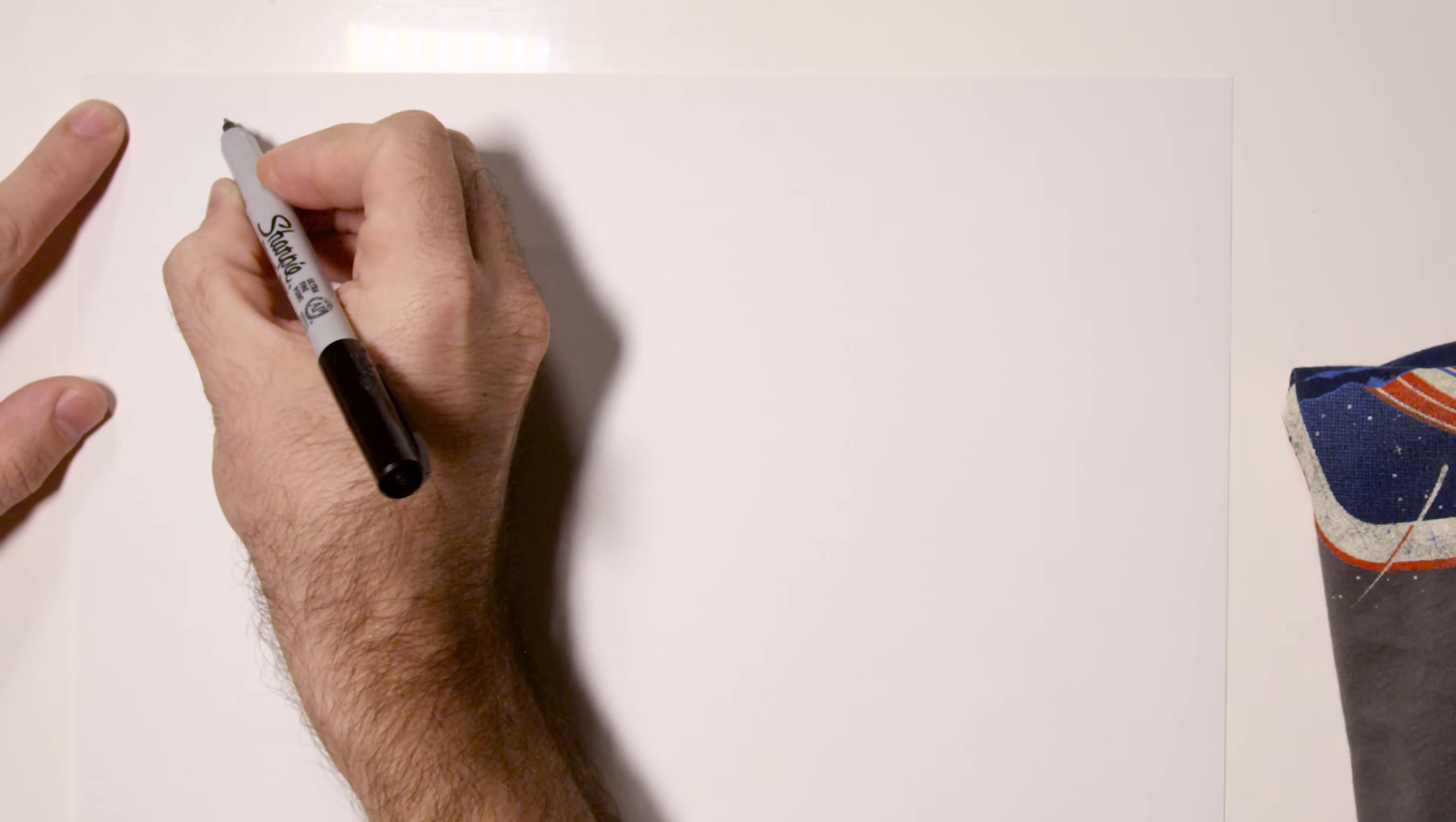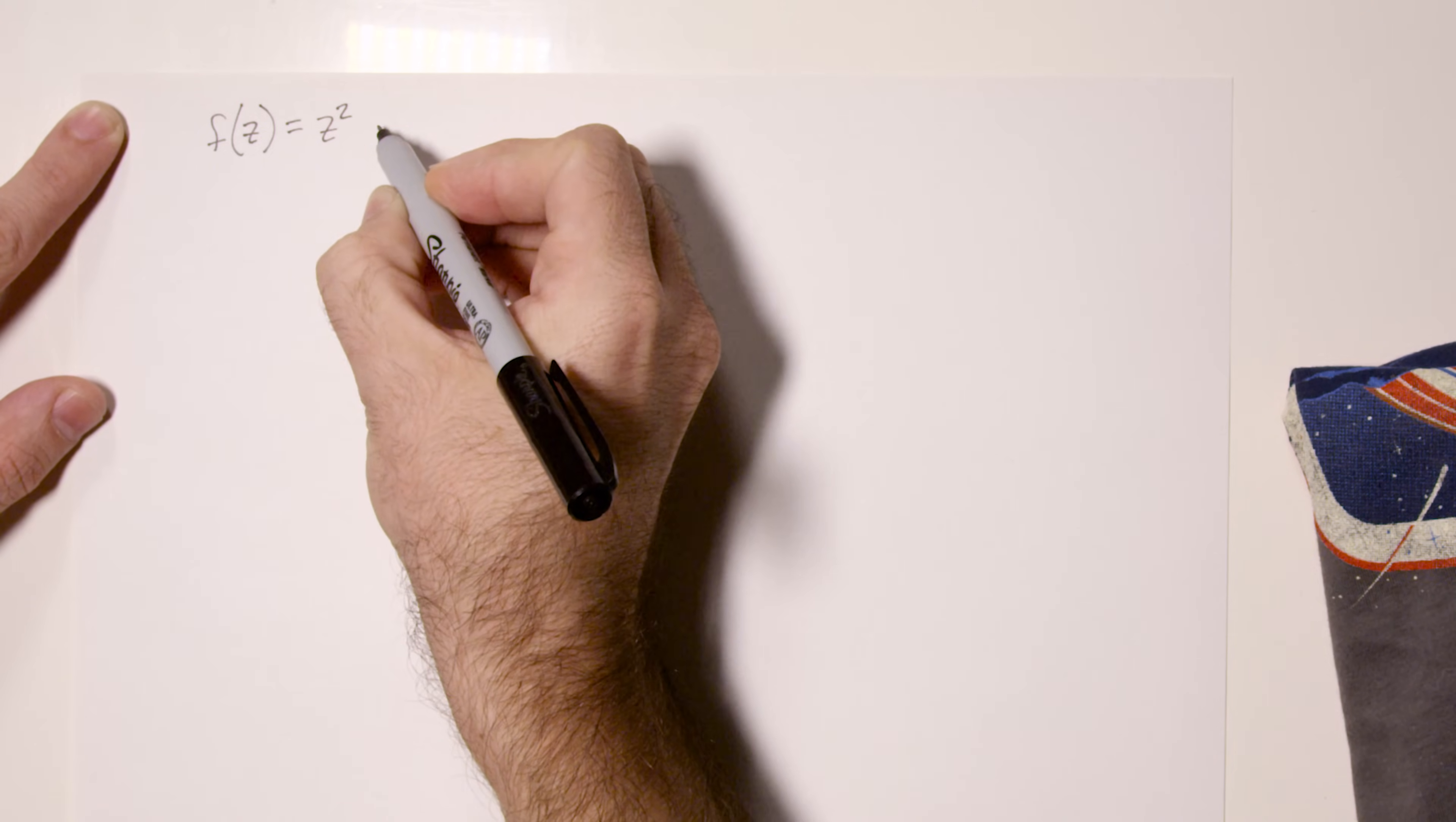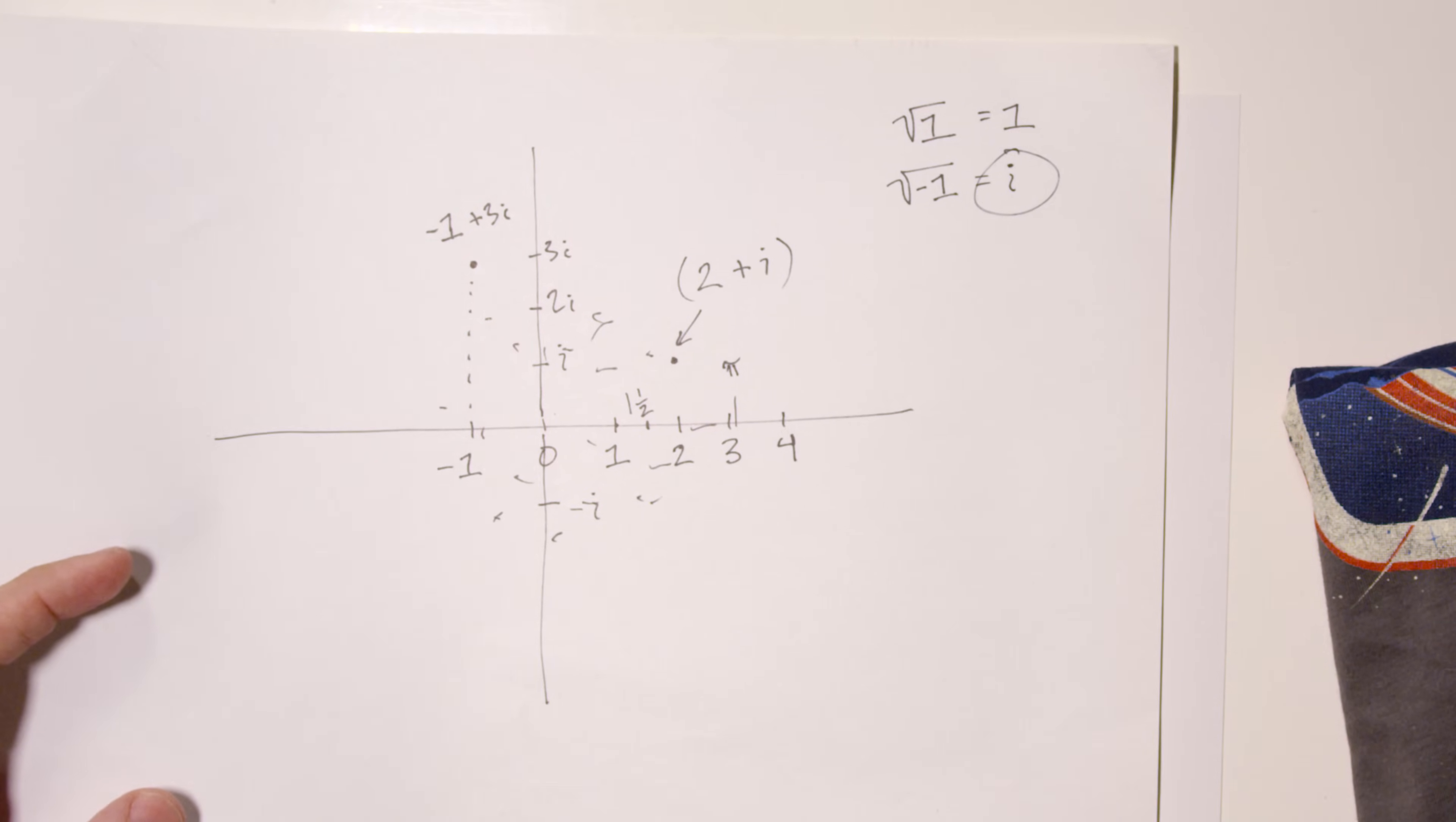So let's talk about functions. A function is just a mapping from numbers to some other numbers. And the function that we're going to be using to determine whether a number belongs to the Mandelbrot set or not looks like this. It's a function of a variable z such that its value at z equals z itself squared plus c, where c is any complex number. c is the number that we have located on this plane and we want to know whether it belongs in the set or not.